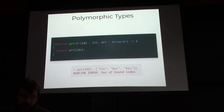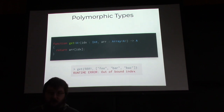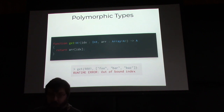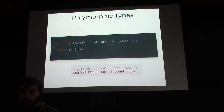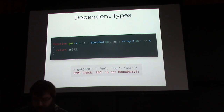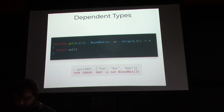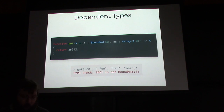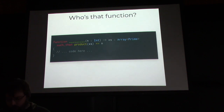We want our compiler to warn us if our index is bigger than our array length. To do that, we need to tell the compiler at the type level what the length of the array is. We need a type that depends not just on other types like polymorphism, but a type that depends on normal values. We add a type-level number n that tells the compiler how long the array is, and a value that enforces that our index must be between 0 and n minus 1. We get a type error at the time we write our code, before it goes out and does horrible things.